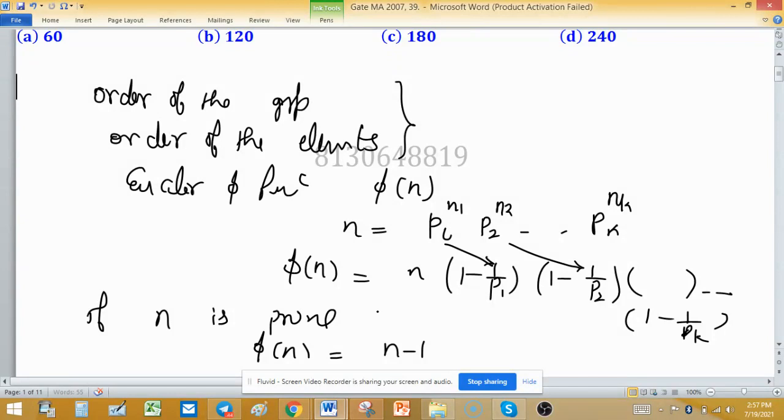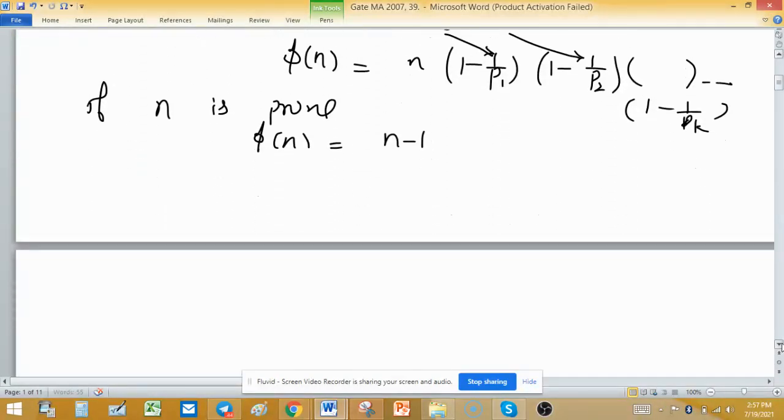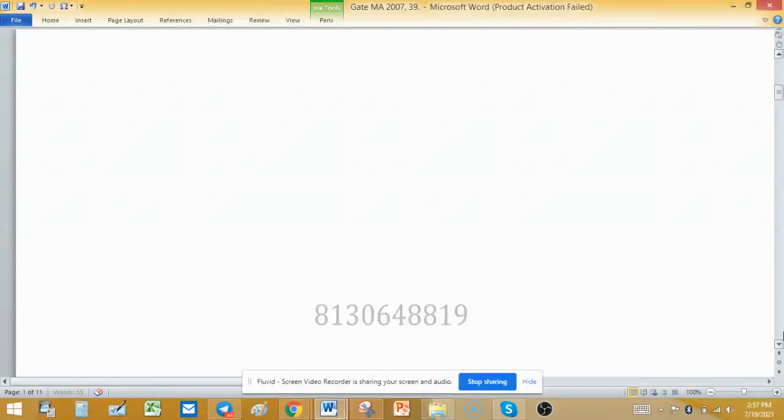So we have to find the order or number of elements in U(n) where n is 248.